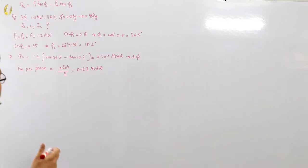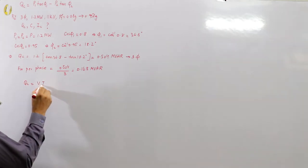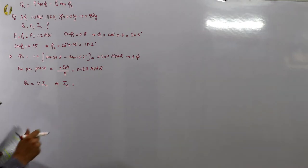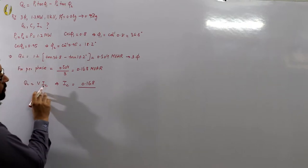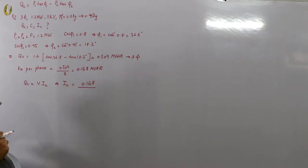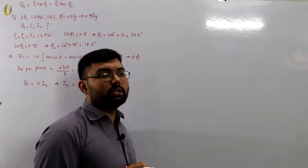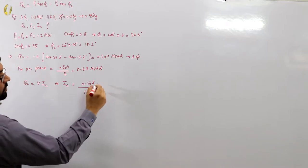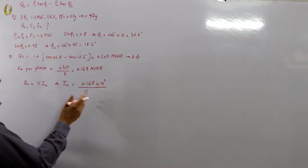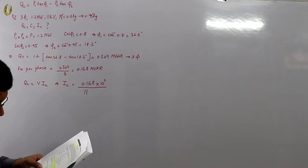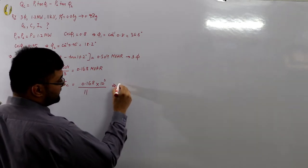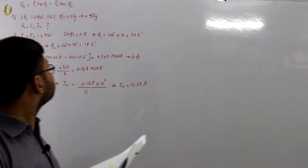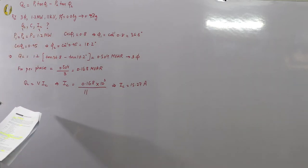Using QC = V × IC, the capacitor current IC = QC / V = 168 kVAR / 11 kV, which gives IC = 168 / 11 = 15.27 amperes. This is the leading current drawn by the capacitor bank.